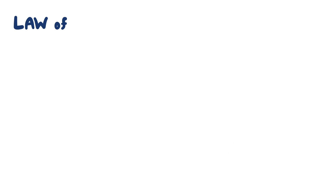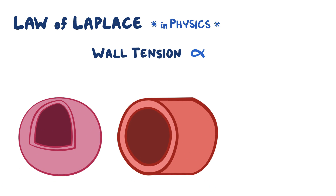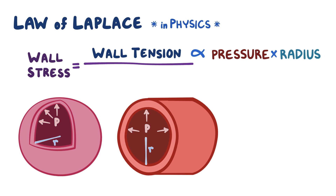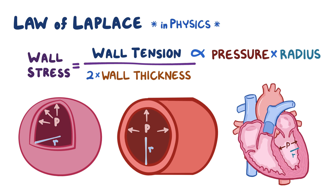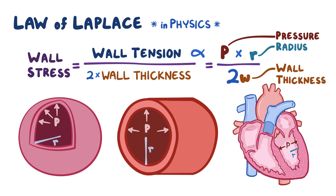As a quick recap, the Law of Laplace states that the wall tension of a hollow sphere or cylinder is proportional to both the pressure of its contents and its radius. Wall stress is the wall tension divided by 2 times the wall thickness. When applied to hollow spherical objects like the left ventricle of the heart, the formula is: wall stress equals P times R over 2W, where P is pressure, R is total radius, and W is wall thickness. In short, wall tension is directly proportional to pressure and radius, and wall stress is proportional to wall tension but inversely proportional to 2 times the wall thickness.